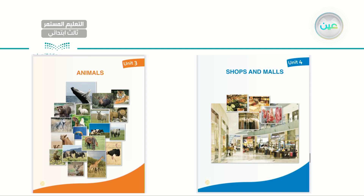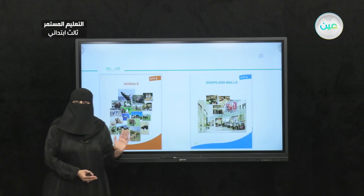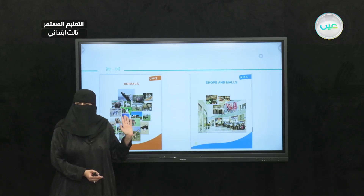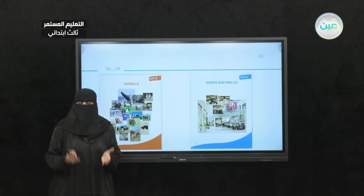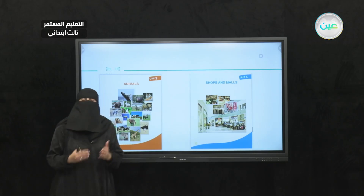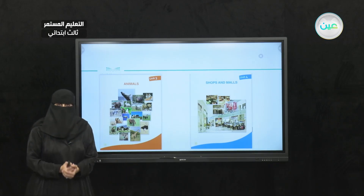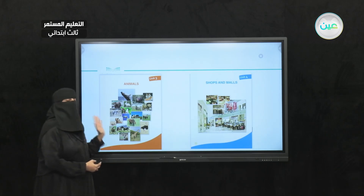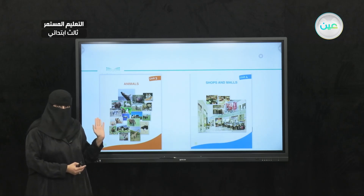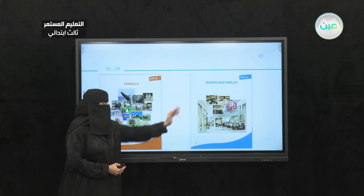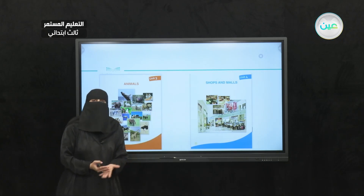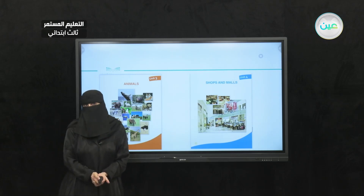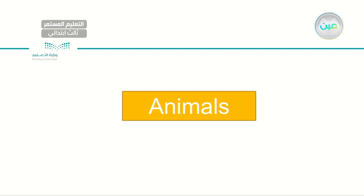These are the last two units of our term. The one on your left is animals. Here, we were able to name different kinds of animals, what do animals eat, what do they produce, and we were able to name singular and plural nouns of animals. While on your right side, we have shops and malls — we name different kinds of shops and what we can get from each shop. So let's start with unit number three, animals.